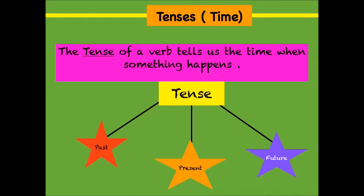Now students, let us learn about the tenses. So what do you mean by tenses? Tenses are simply the way we talk about time in English. And what do you mean by time? We mean the past, present and future. So when we want to say when something happened, we are using tenses. In English there are mainly three kinds of tenses: past, present and future.